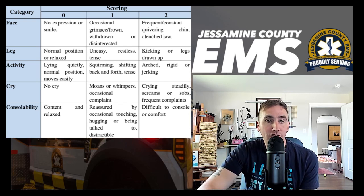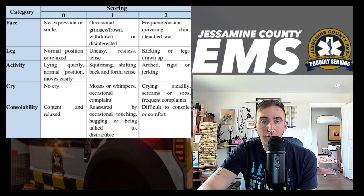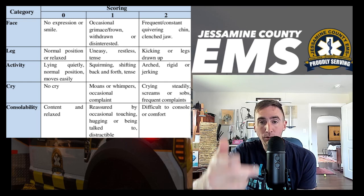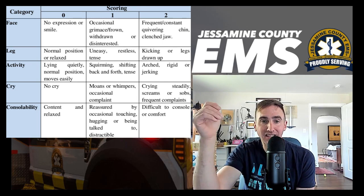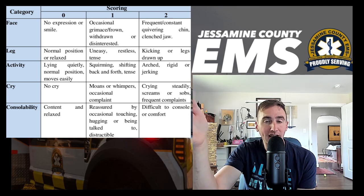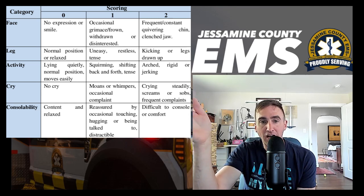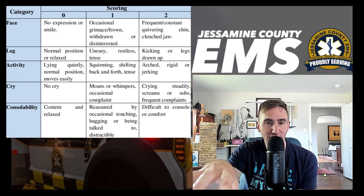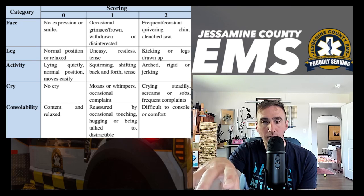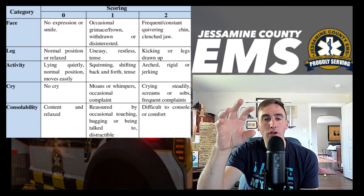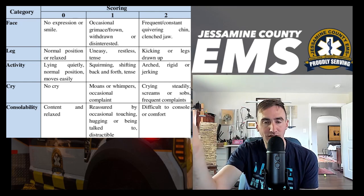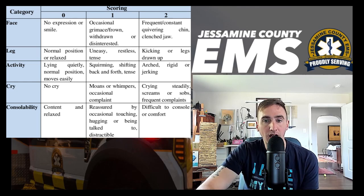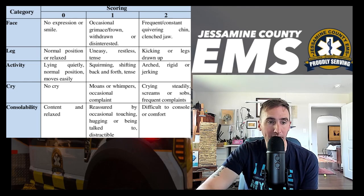With the face, if they are clenching their jaw or quivering their chin, then they would score a two, which is the highest you can get on the FLACC scale. If they're kicking or drawing their legs up, that also gets a two. You'll want to pause and look at the rest of this scale to become familiar with it and quantify how much pain a young child is in to determine whether or not they need pain management.